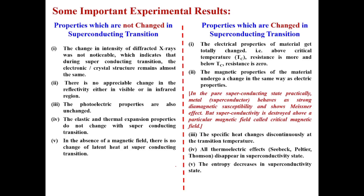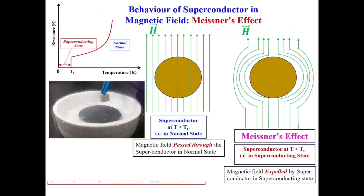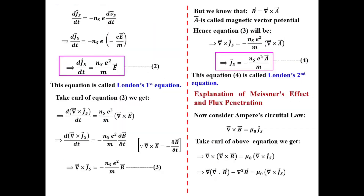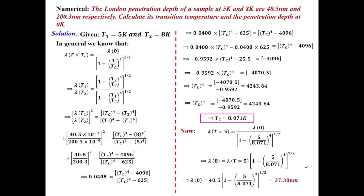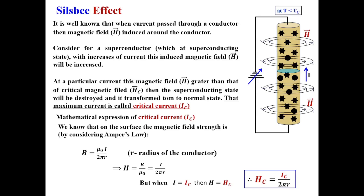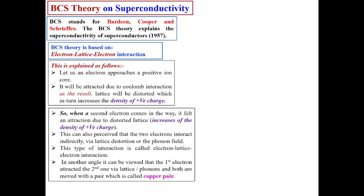The topics we have already discussed include Meissner's effect, London equation, variation of London penetration depth, critical magnetic field, Silsby effect, and corresponding numerical problems. Now we are going to discuss BCS theory on superconductivity.